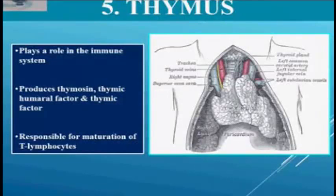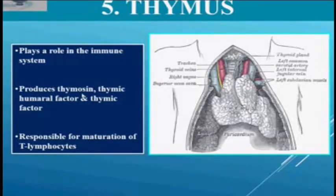Any damage to the thymus gland can cause an increase in infection. So these are the functions of thymus gland: it plays a role in the immune system, it produces thymosin, thymic humoral factor and thymic factor, and it helps in maturation of T lymphocytes, which is the subset of white blood cells.